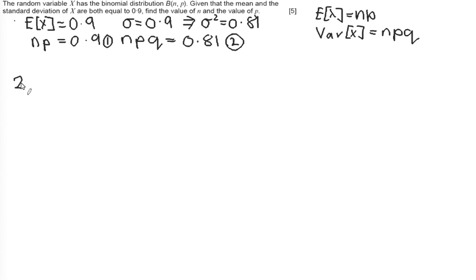So the reason I do this, so we're going to do 2 divided by 1, remember where possible to give indication as to what it is you're doing. I'm going to do npq over np equals 0.81 divided by 0.9.